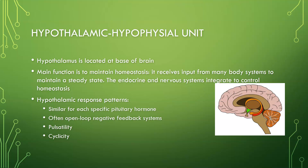The hypothalamus is located at the base of the brain, shown in this little green area right here. Its main function is to maintain homeostasis — it receives input from many body systems to maintain a steady state. The endocrine and nervous systems integrate to control homeostasis. The hypothalamic response patterns are specific to each pituitary hormone; for example, the thyroid uses an open-loop negative feedback system.